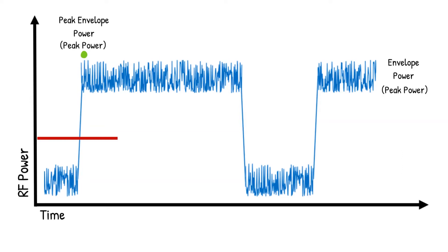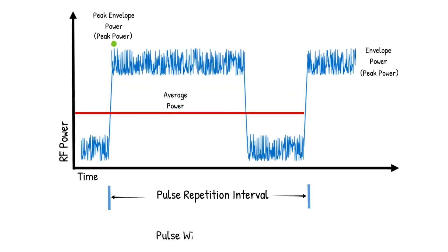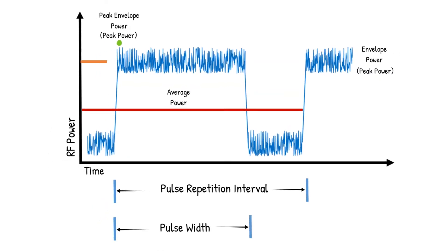Additionally, average power can mean the average power over the pulse-repetition interval, but it can also represent the average power of a single packet or burst, referred to here as pulse average power.